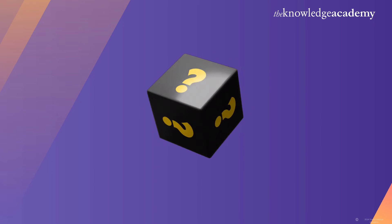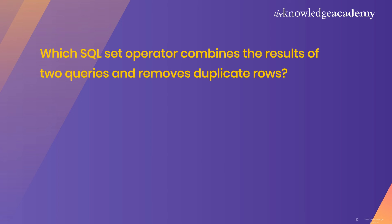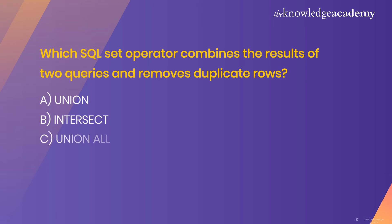Another question for you: which SQL set operator combines the results of two queries and removes duplicate rows? Options are: A) UNION, B) INTERSECT, C) UNION ALL, or D) EXCEPT. Write the answers in the comments section below.